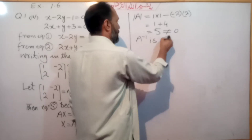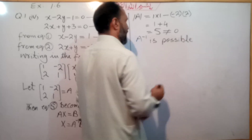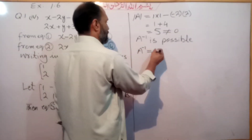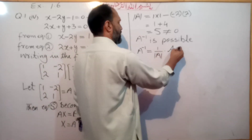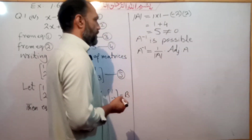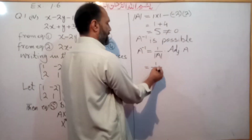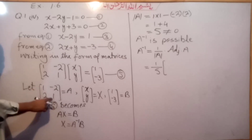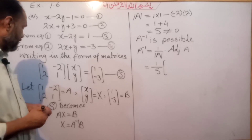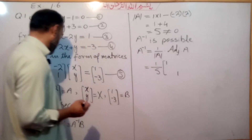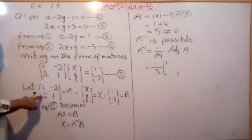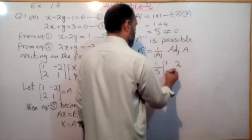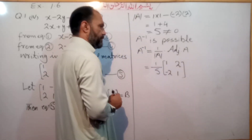Since the determinant is 5, not zero, A inverse is possible. A inverse = 1 over 5 times adjoint of A. The adjoint: swap the principal diagonal elements (1 and 1 stay as 1 and 1), and change signs of the off-diagonal elements: minus 2 becomes plus 2, and 2 becomes minus 2. So adjoint of A = [[1, 2], [-2, 1]].